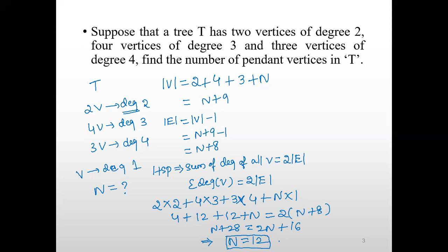That means there are 12 vertices having degree 1 — the tree contains 12 pendant vertices. For example, in a sample tree, a vertex with 2 edges incident on it has degree 2, while a vertex with only one edge has degree 1 and is a pendant vertex. In the same way, this tree has 12 pendant vertices.